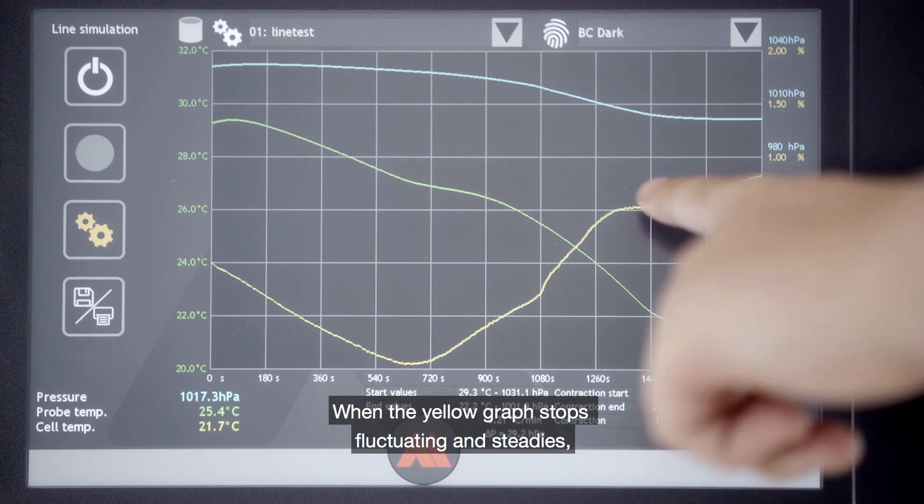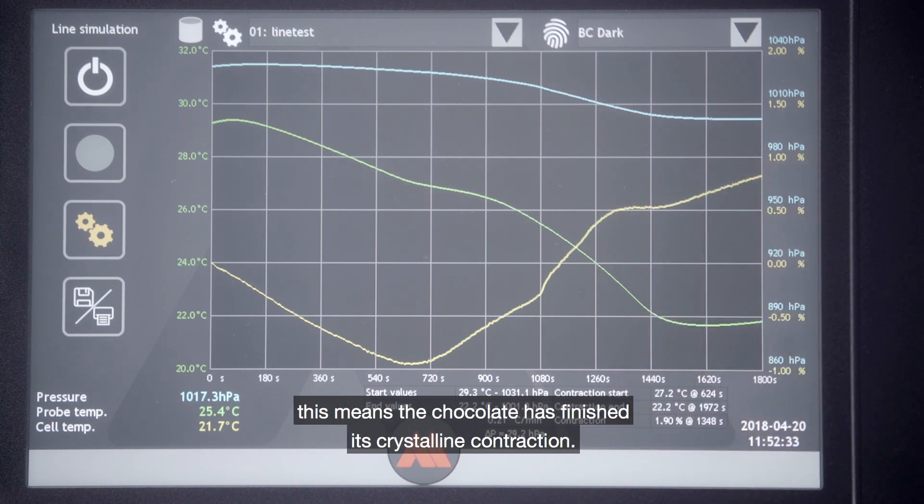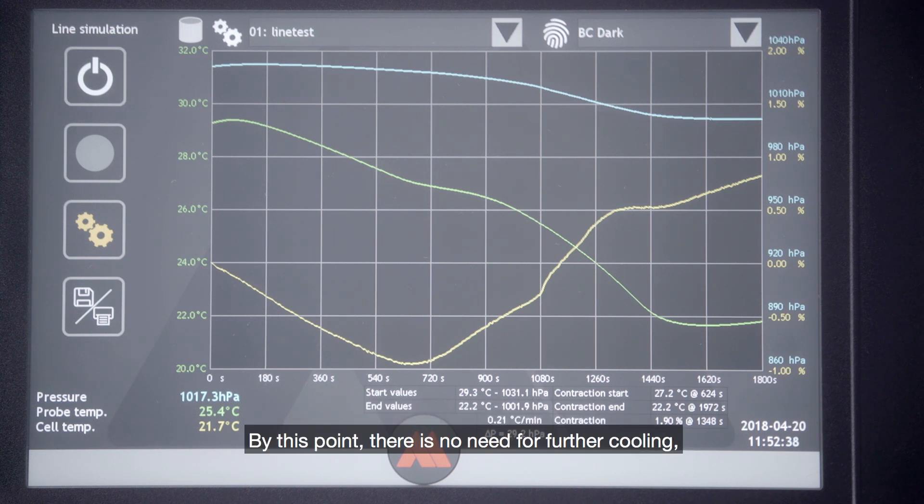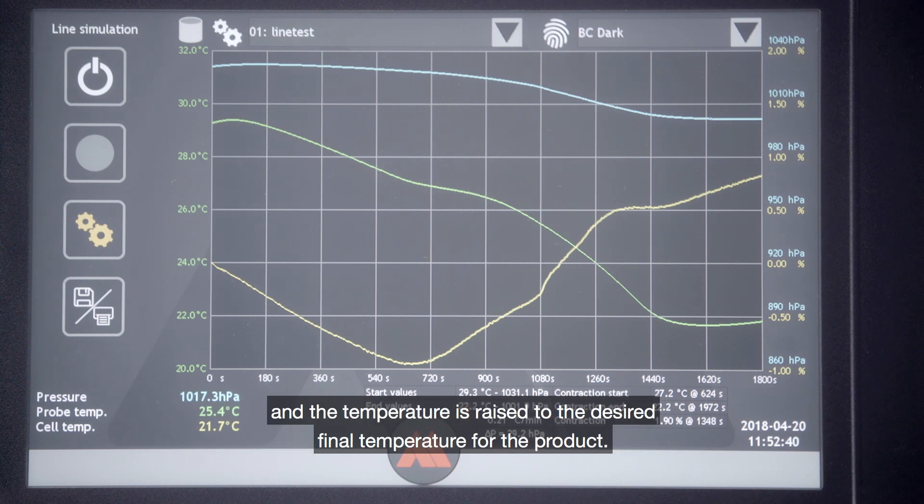When the yellow graph stops fluctuating and steadies, this means the chocolate has finished its crystalline contraction. By this point, there is no need for further cooling and the temperature is raised to the desired final temperature for the product.